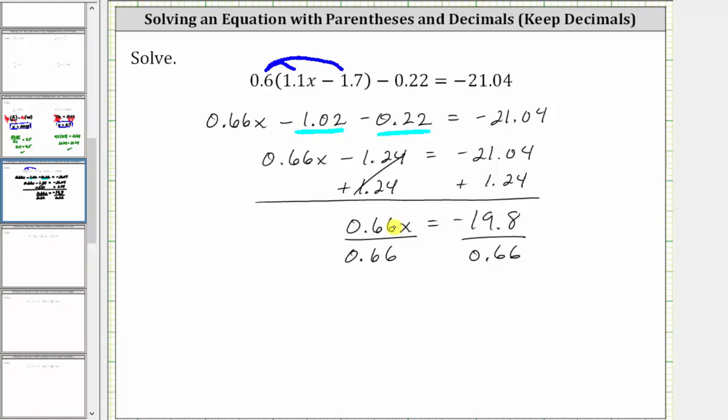Simplifying on the left, 0.66 divided by itself simplifies to one. One times x is x. We have x equals negative 19.8 divided by 0.66 is equal to negative 30.